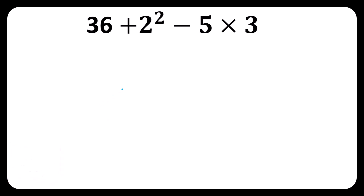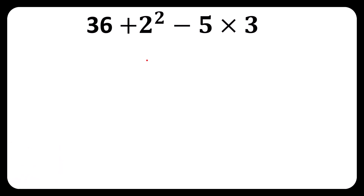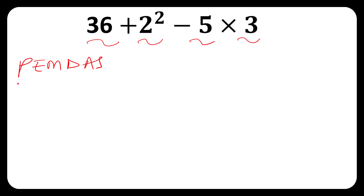What is the answer for this mathematical expression? This one is very simple. We are given 36 plus 2 squared minus 5 times 3. With the help of PEMDAS, this one will be easier and faster. P stands for brackets, and E is for exponents.